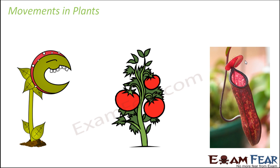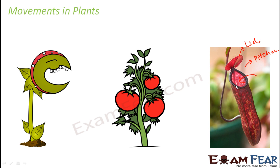Another example is insectivorous plants like the pitcher plant. These plants eat insects — they have leaves modified in the shape of pitchers with a lid. As soon as an insect comes nearby, it is trapped into the pitcher, the lid closes, and the insect is eaten and digested within the plant. The closing and opening of the lid is also a movement in a plant. In that way, we can see that parts of the plant exhibit movement.